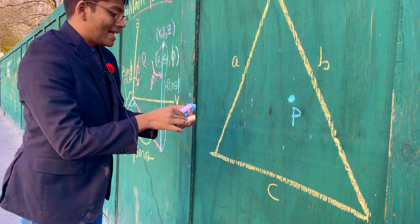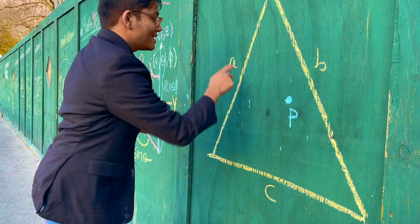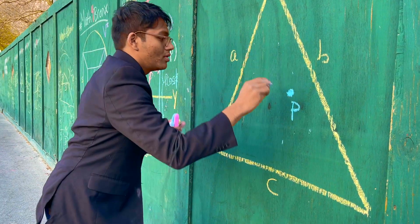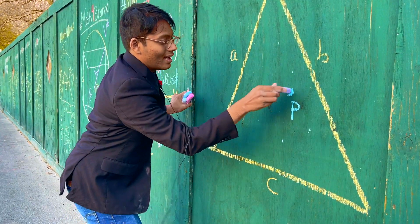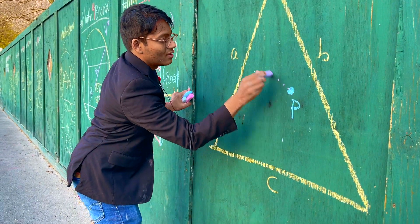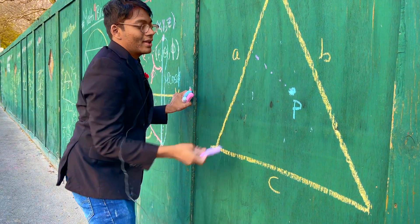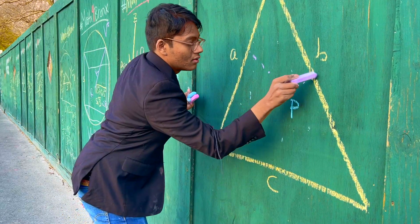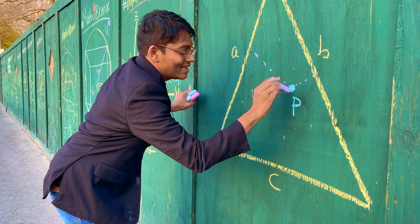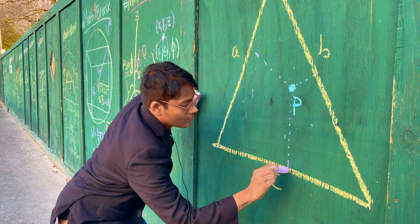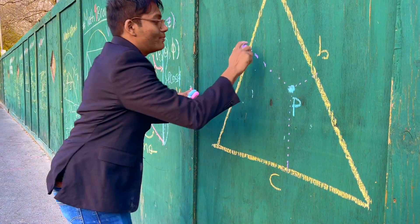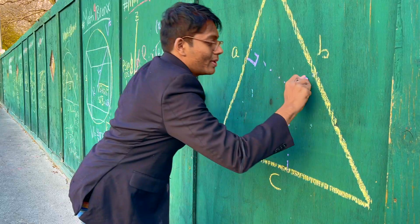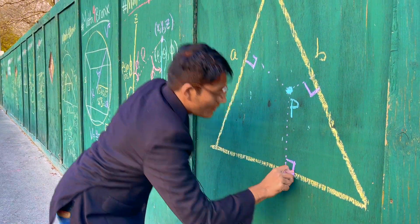Let's construct an altitude from P to side A. Then P to side B, and P to side C. And because these are altitudes, they're going to be perpendicular to each side.